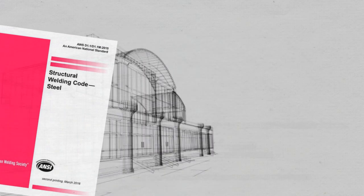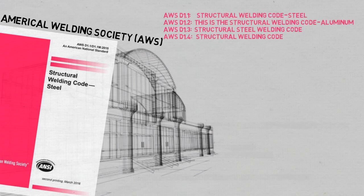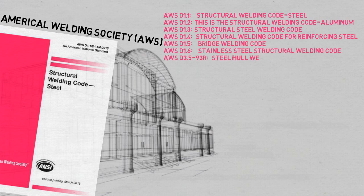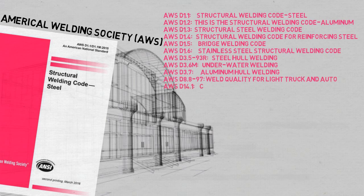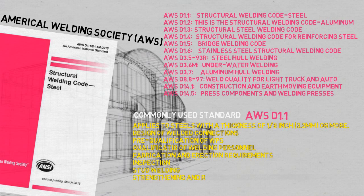AWS, on the other hand, governs structural welding and has more than 350 welding codes, procedures, practices, and standards. The most popular standard is AWS D1.1, which applies to steels with a thickness of 1/8 inch or more. The areas covered in AWS D1.1 are: the design of welded connections, pre-qualification of WPS, qualification of procedures and welding personnel, fabrication and erection requirements, inspection, and strengthening and repairing existing structures.